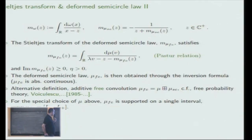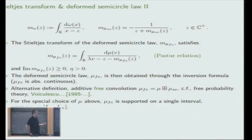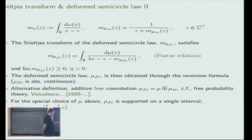For the special choice of this Jacobi measure, the free convolution measure, or deformed semicircle law, is supported on a single interval, and the density is strictly positive. I denote the interval by L_minus and L_plus.